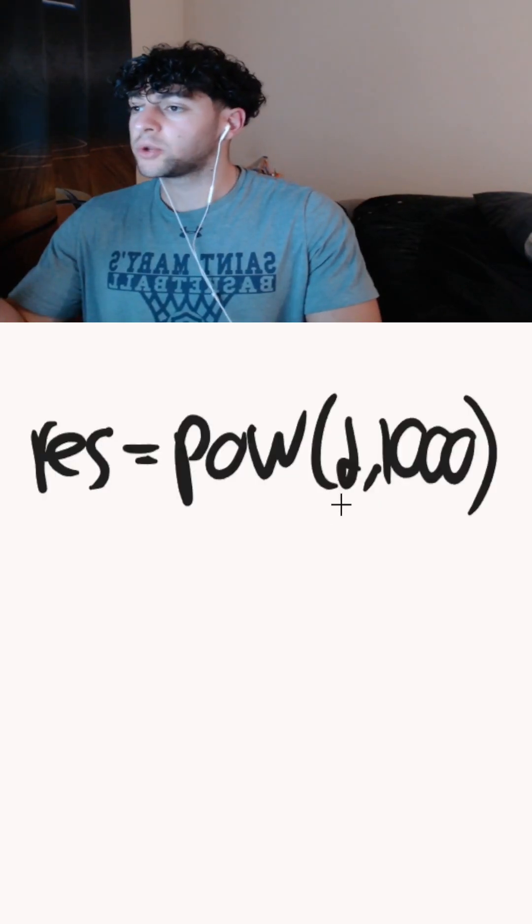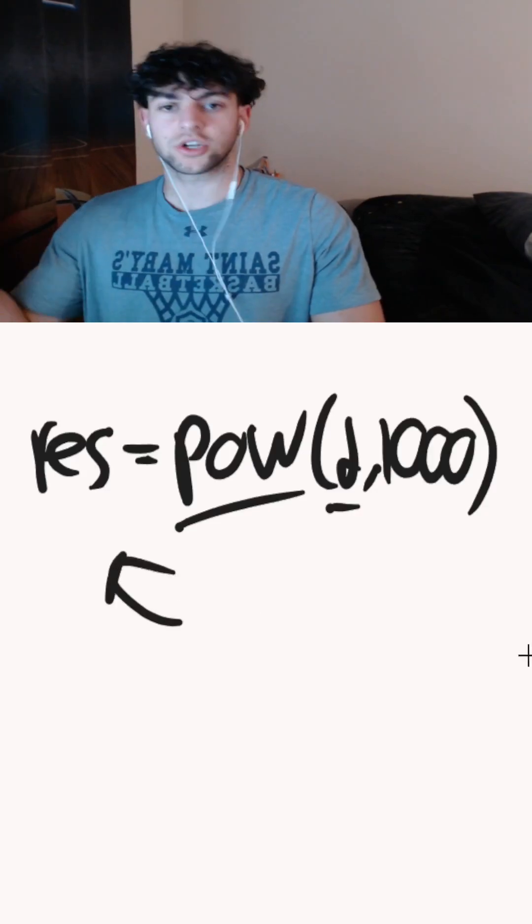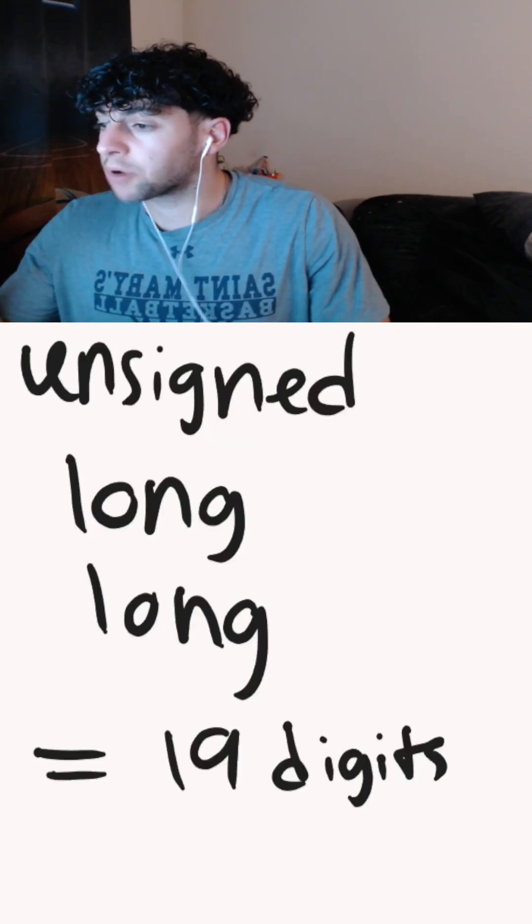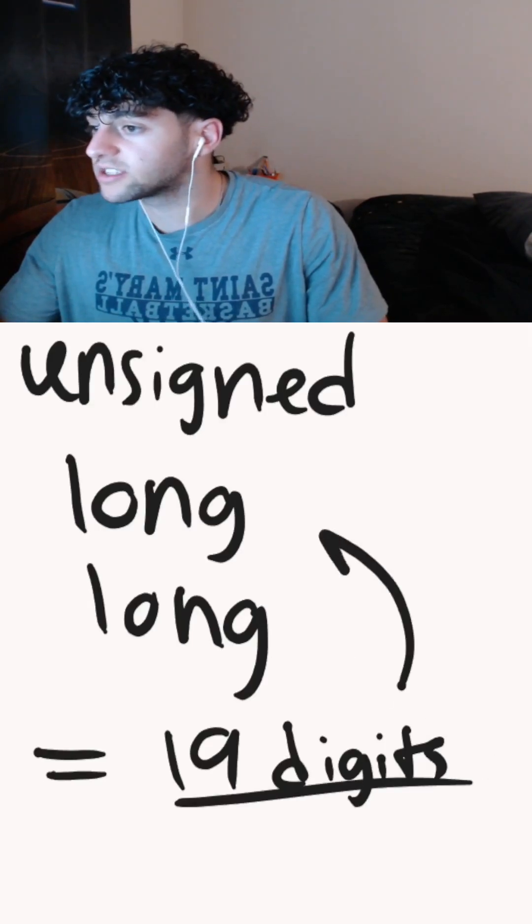Intuitively, you would solve this by computing 2^1000 using a power function and storing it in a variable. However, the issue with this approach in C is that the largest number you can store is 19 digits long using an unsigned long long.